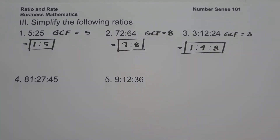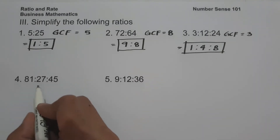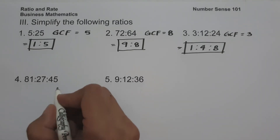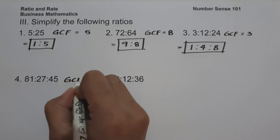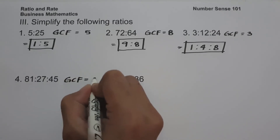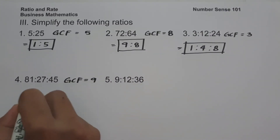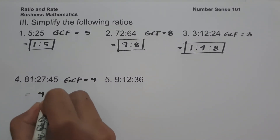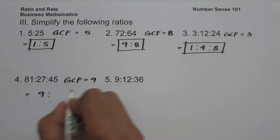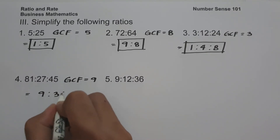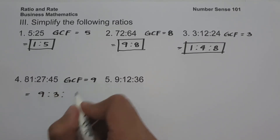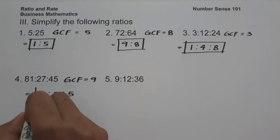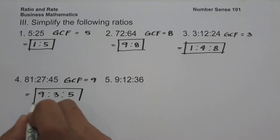On number 4, we have 81 is to 27 is to 45. The GCF of 81, 27, and 45 is 9. 81 divided by 9 is 9, 27 divided by 9 is 3, and 45 divided by 9 is 5. Therefore the simplified ratio is 9 is to 3 is to 5.